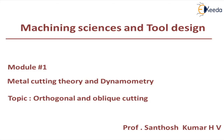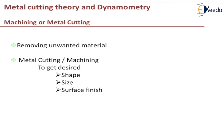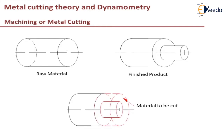Let me introduce the subject — what is machining or metal cutting? It is basically operations which are performed on the metal to remove the unwanted material so that we get the desired shape, size, and surface finish in the workpiece useful for our application. As you can see in the slide, there is a raw material on the left side and there is a finished product. The raw material has been converted into a finished product after machining operation. The red dotted line is the excess material to be cut by the machining process. Once you remove this excess material, you get a finished product in the desired shape and size.